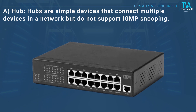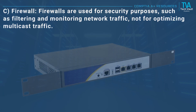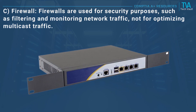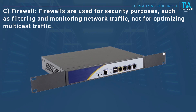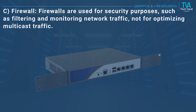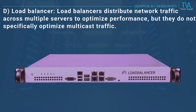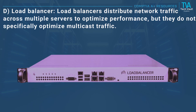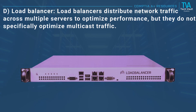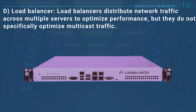A, hub: hubs are simple devices that connect multiple devices in a network but do not support IGMP snooping. C, firewall: firewalls are used for security purposes such as filtering and monitoring network traffic, not for optimizing multicast traffic. D, load balancer: load balancers distribute network traffic across multiple servers to optimize performance, but they do not specifically optimize multicast traffic.